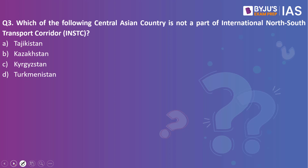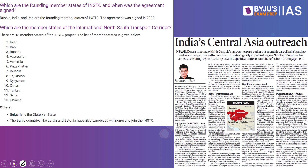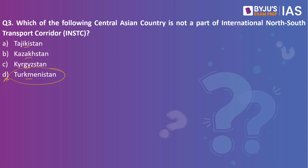Next question: Which of the following Central Asian countries is not part of the International North-South Transport Corridor (INSTC)? Tajikistan, Kazakhstan, Kyrgyzstan, or Turkmenistan? The answer is Turkmenistan. This article in The Indian Express references the INSTC. The founding members are Russia, India and Iran, and the agreement was signed in 2002. There are 13 member states including India, Iran, Russia, Azerbaijan, Armenia, Kazakhstan, Belarus, Tajikistan, Kyrgyzstan, Oman, Turkey, Syria and Ukraine. Turkmenistan is not among them, so the answer is D.